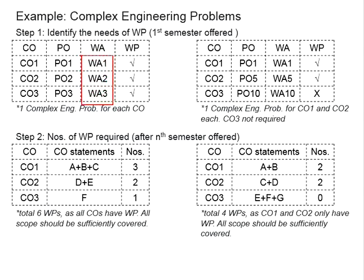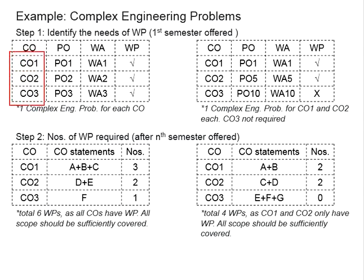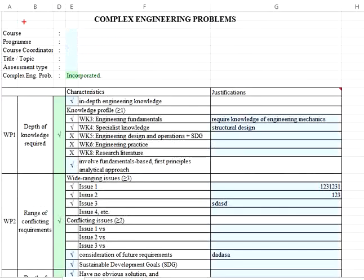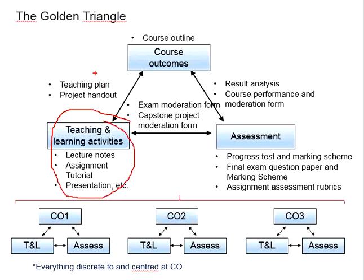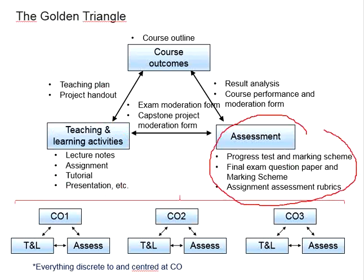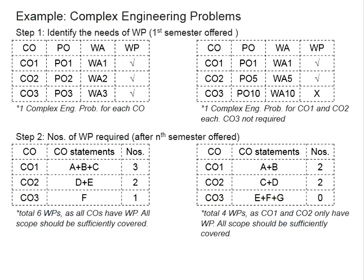Looking at those graduate attributes, you know there is a need for complex engineering problems. In the first semester you offer the course, you will need to make sure you do have the complex engineering problems. Since you now have 3 COs and all COs require complex engineering problems, the bare minimum is 1 for each CO. That means you will have to fill in this form 3 times for 3 different kinds of problems addressing 3 different COs. Those problems should have been discussed during teaching and learning activities, and there should be relevant assessments tied to the complexity of those problems. This will be the first step.